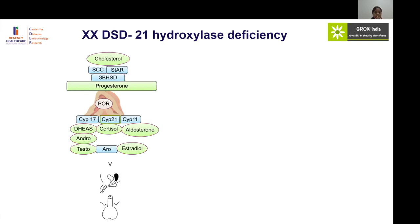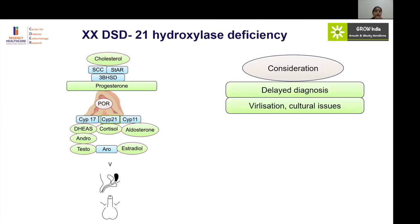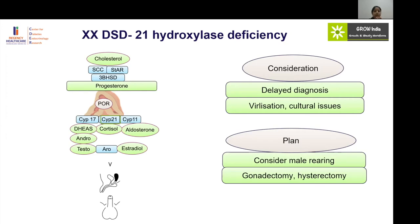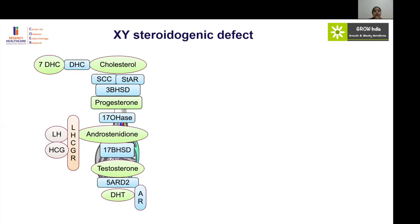In rare situations where a child with 21-hydroxylase deficiency presents at puberty with cyclical hematuria after being reared as male, or when there is severe virilization, or cultural preference to raise the child as male, gender of rearing as male can be considered. In those cases, gonadectomy and hysterectomy can be planned accordingly.